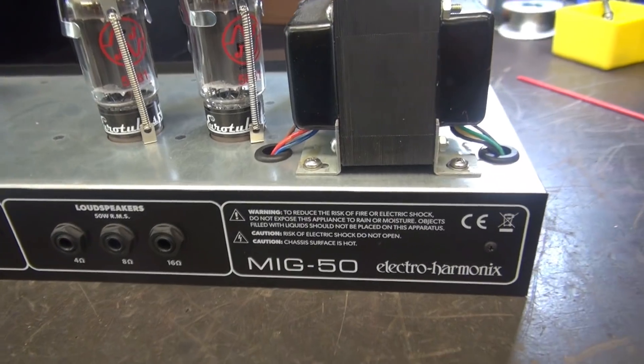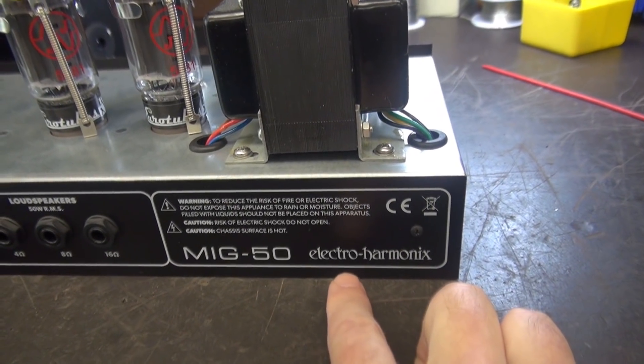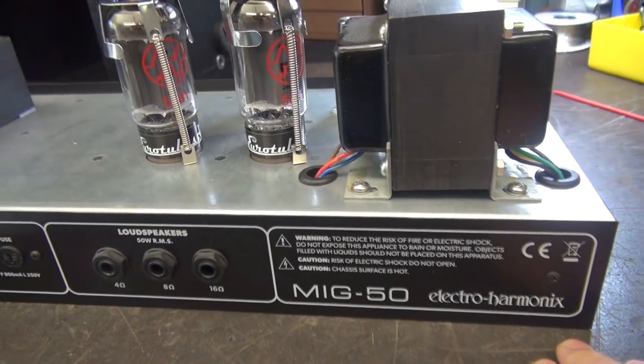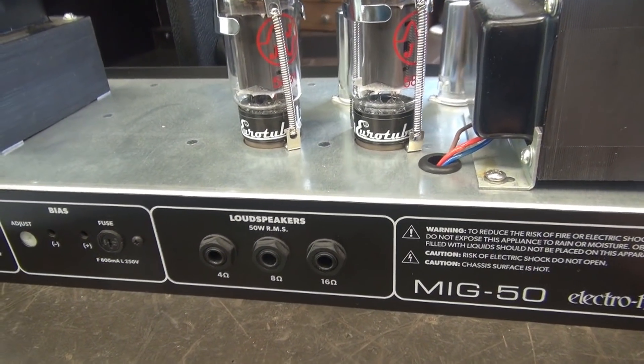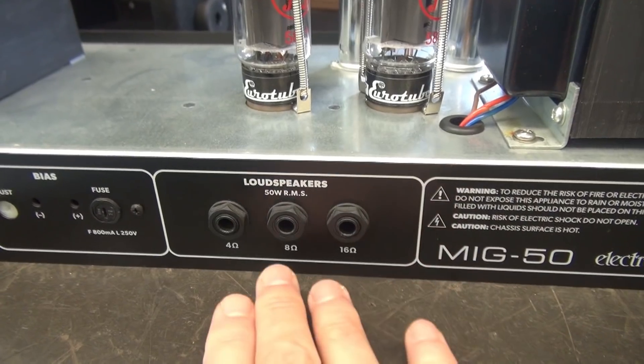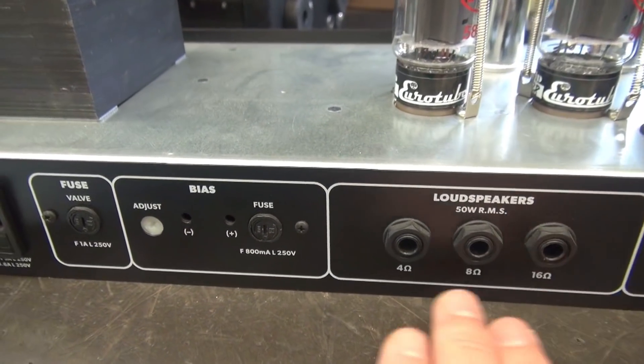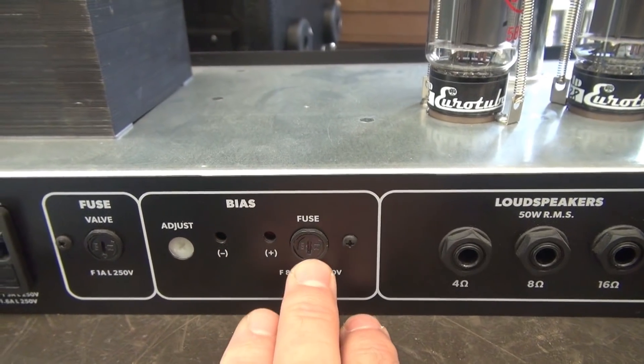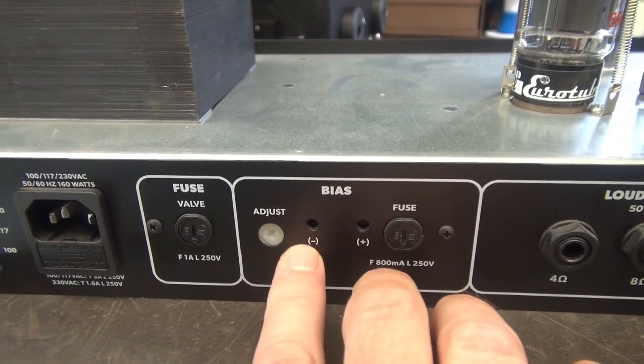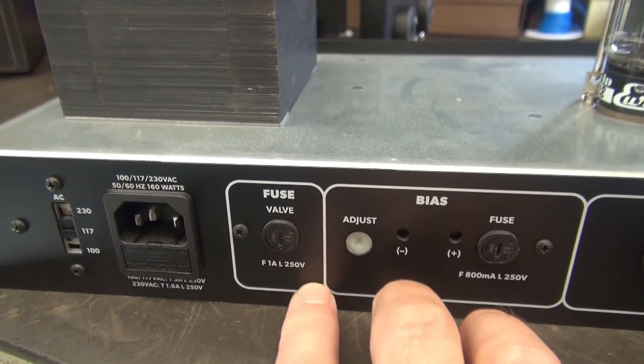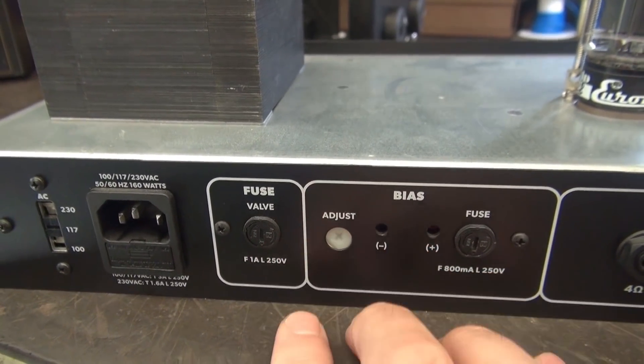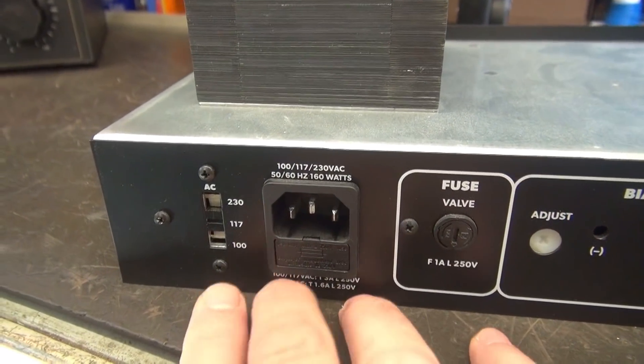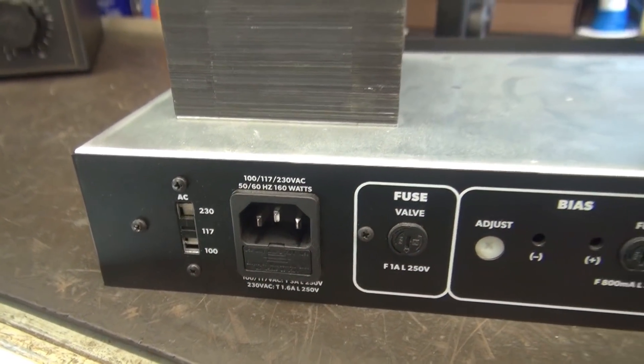Here we are back side. You see she's labeled with Electro Harmonix. I hear though that these are actually made by Sobtec in the beginning. Loudspeaker outputs for 4, 8, or 16 ohm. Bias adjustment with convenient test points and a fuse. There's your adjustment. Now the fuse here for the valve. Here's your power input and you have selectable line input switch here.